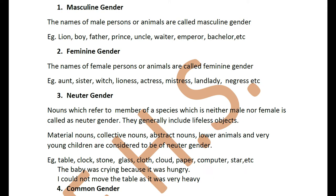Neuter gender: when you are talking of neuter gender, it is something that is neither a male nor a female — it doesn't have any sex at all. It is an object which has no life but it comes under nouns. This may include even your abstract nouns. Lifeless things like a table, a rock, a marble, pen, pencil, book — all these come under neuter gender. Even material nouns and collective nouns — you cannot say it is male or female, that's why they all come under neuter gender.